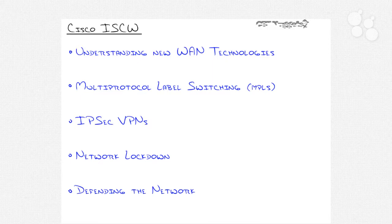Let me talk about what we'll be covering in each section. IPSec VPNs: we'll be implementing both site-to-site VPNs and remote access VPNs. Network lockdown will cover how to defend against different attacks, how to secure management access to your routers, using access lists beyond just standard and extended, implementing Cisco AAA, and securing all of your network management interfaces and protocols on your router — things like SNMP and SSH.